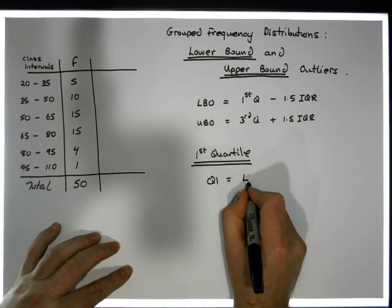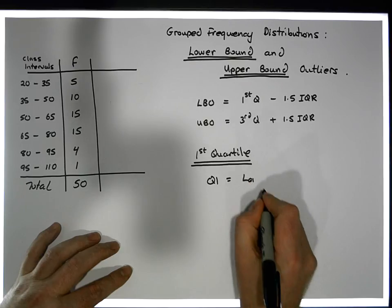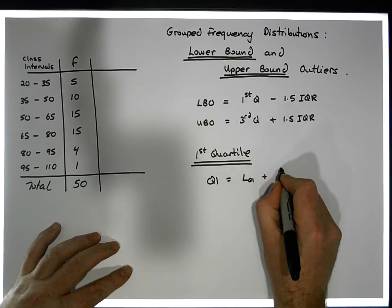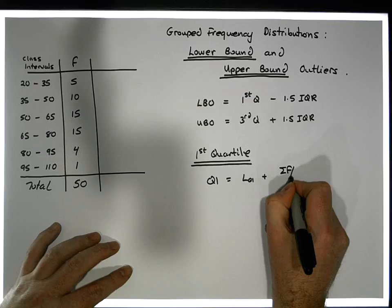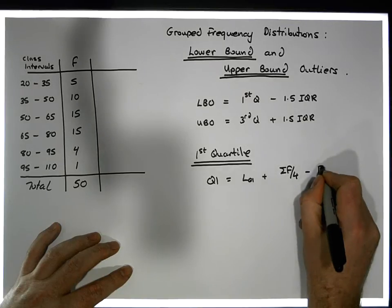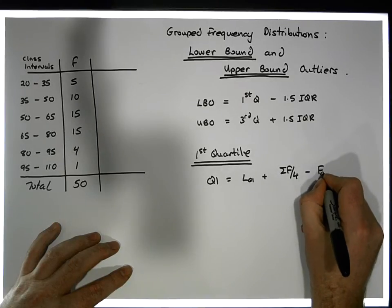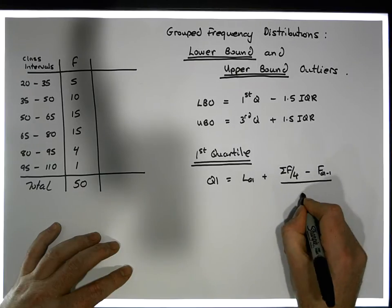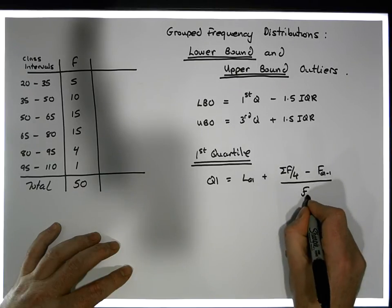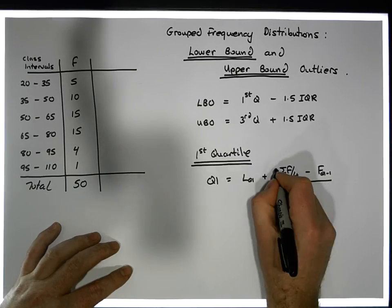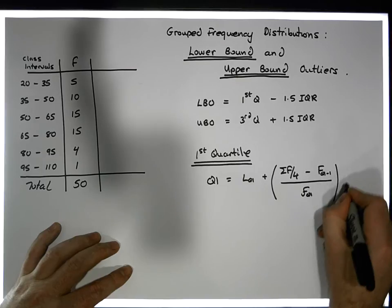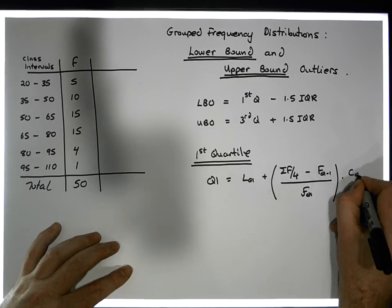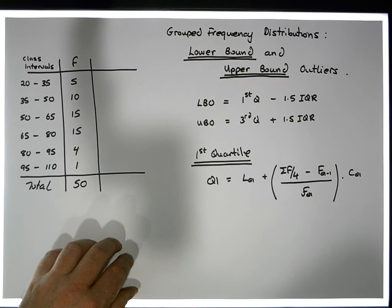Q1 is equal to L of Q1 — the lower bound of the first quartile class — plus sigma F over 4, minus capital F of whatever the quartile class minus 1 (the one before it), divided by small f of Q1 (the actual frequency of the quartile class), times the width of the quartile class, C of Q1.